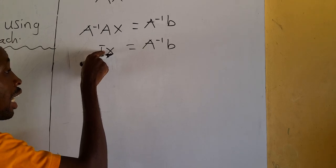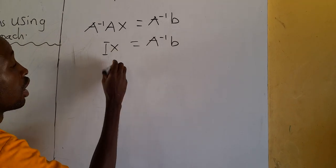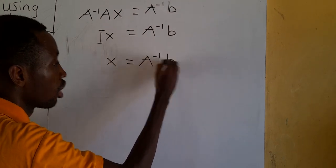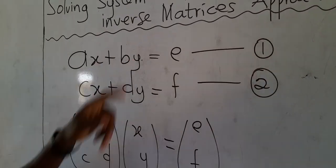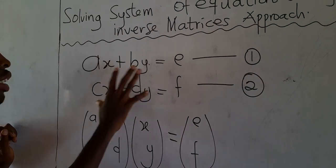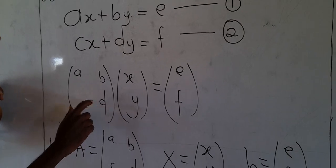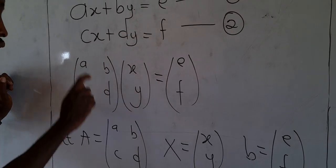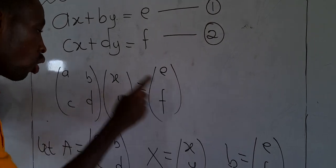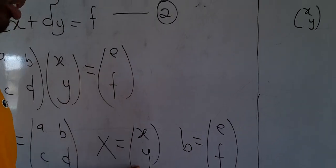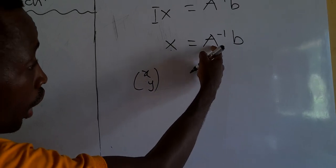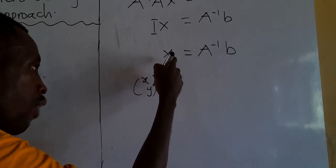So if we are given a system of equations and asked to find x and y, the first step is to rewrite the system in matrix form. Then let A be the coefficient matrix. We find the inverse of A, and multiply it by the constant matrix B to get the values of x and y. It's very simple. If you haven't watched my videos on the inverse of a matrix, please go and watch that first.